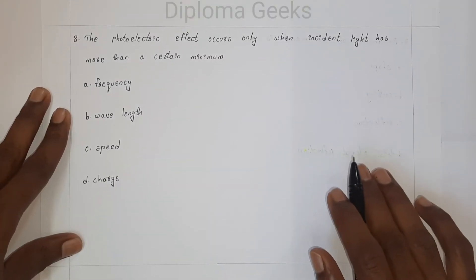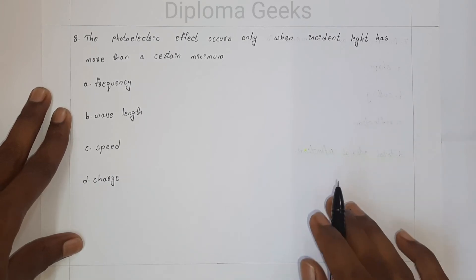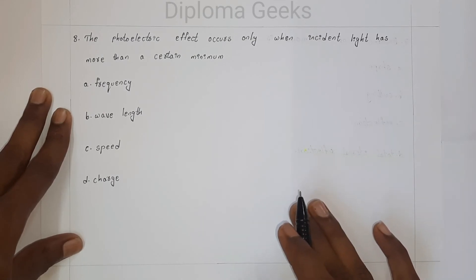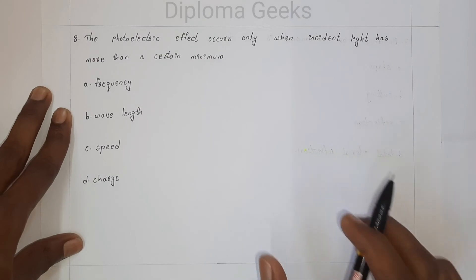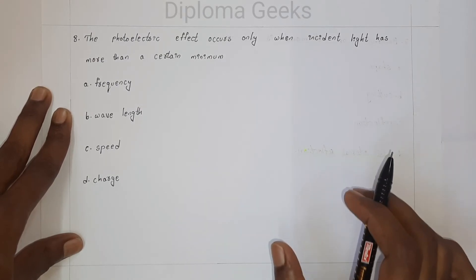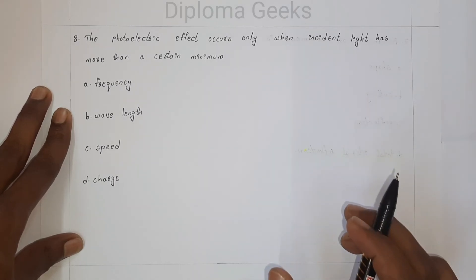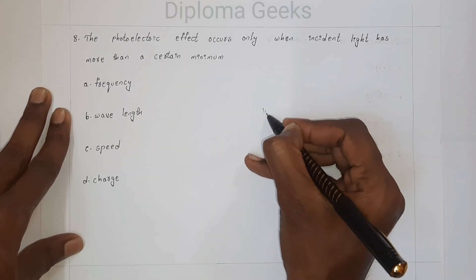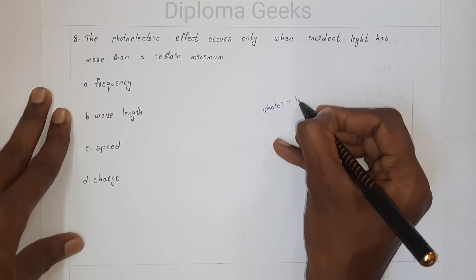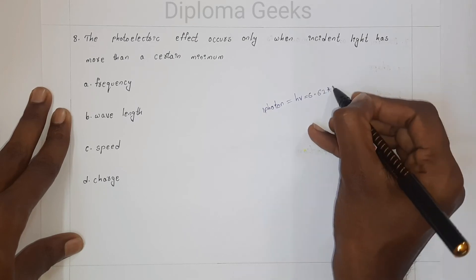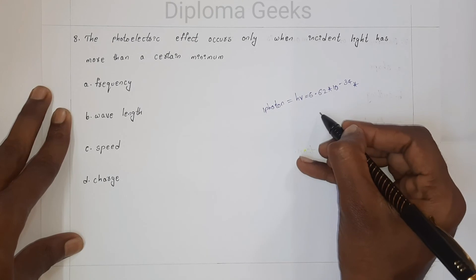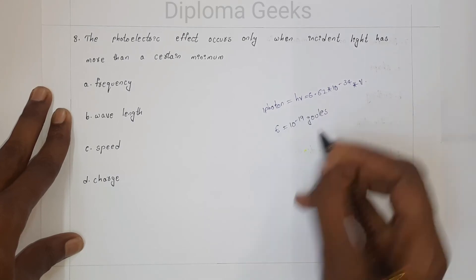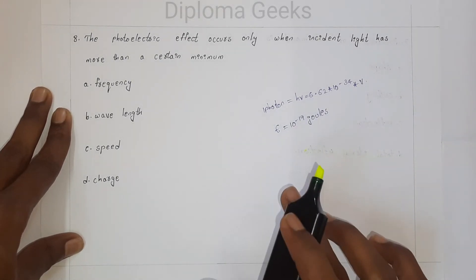Question number eight: the photoelectric effect occurs only when incident light has more than a certain minimum — option A: frequency, option B: wavelength, option C: speed, option D: charge. The basic reason for photoelectric effect is the frequency of light falling on the metal plate. The energy of one photon is E = hv, where h is Planck's constant (6.2 × 10⁻³⁴) and v is the frequency of the electromagnetic radiation, giving energy of approximately 10⁻¹⁹ joules. So the answer is option A: frequency.